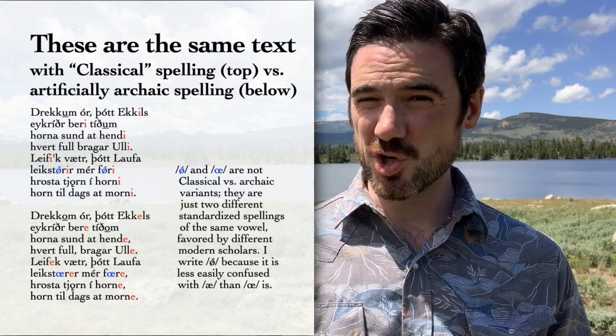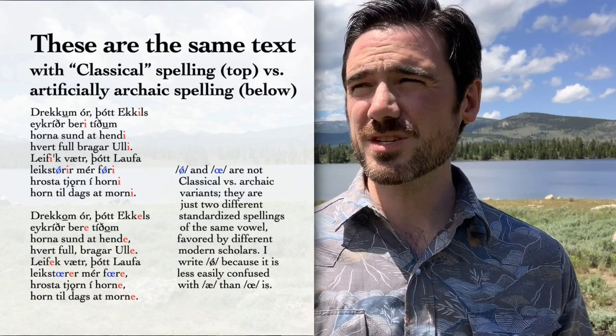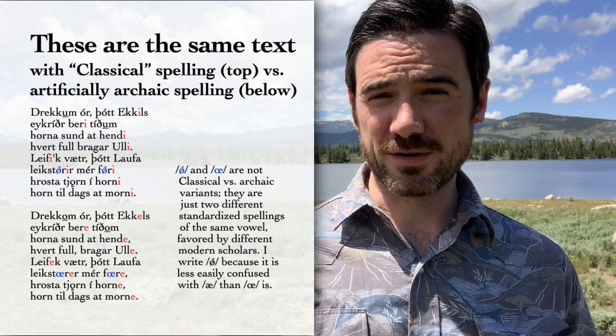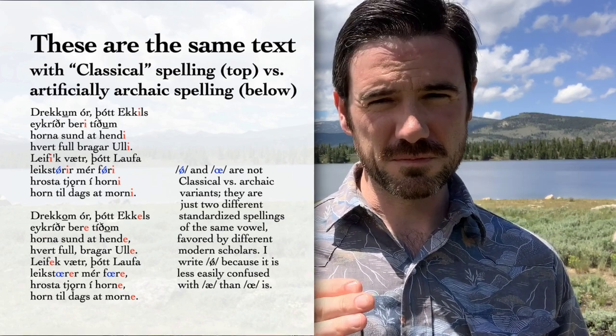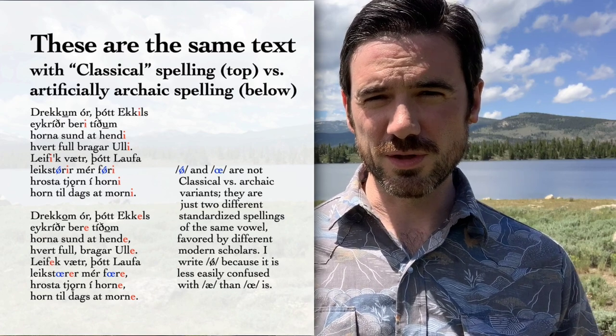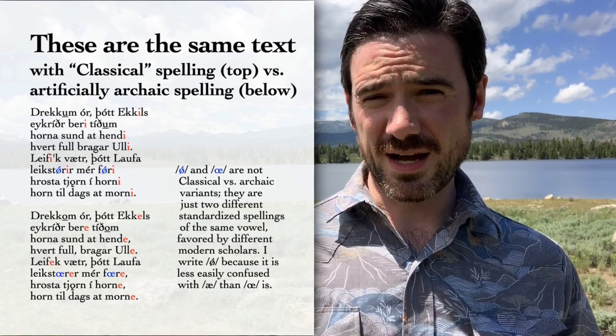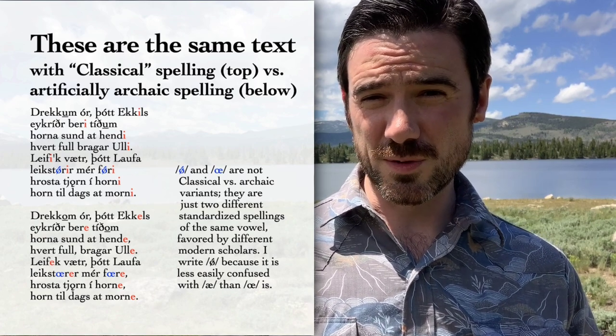What's going on there is that a lot of editors, especially really early ones of Old Norse texts, wanted to present everything in the most archaic possible form they could, even though most of our actual written texts aren't that archaic. So in the oldest written Old Norse in the Roman alphabet, from about 1150 to early in the 1200s, you do see unstressed I and U written as E and O instead.